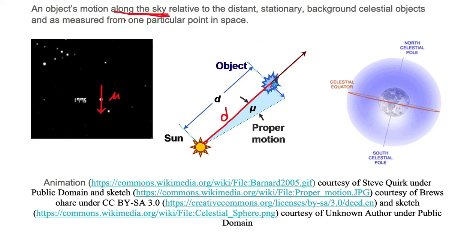This object in this particular case has a proper motion that is perpendicular to d. So I'm going to draw a right angle in here, and then we have to draw the hypotenuse of our right triangle. This angle between d and the hypotenuse I'm going to label as alpha. Alpha is an angle, so it has units of arc seconds, arc minutes, or degrees.